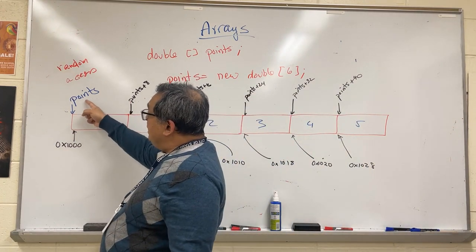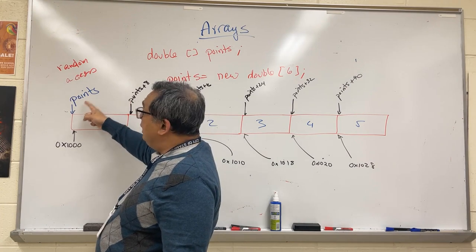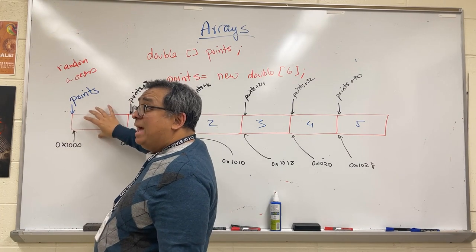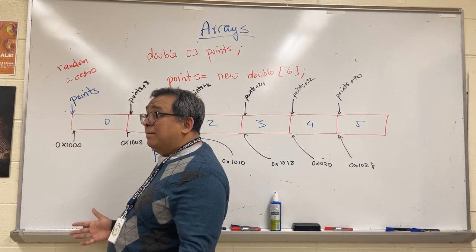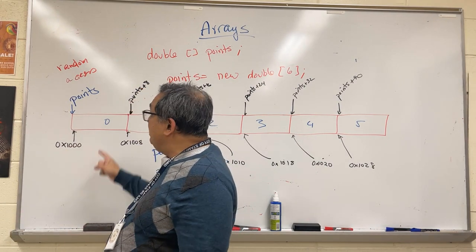Let's say that this array is called points, so that basically means there's a pointer in memory called points that points to some array address, the beginning of the array.